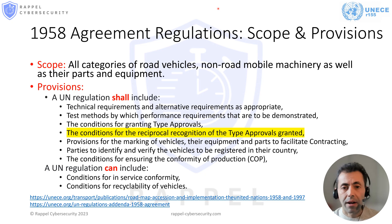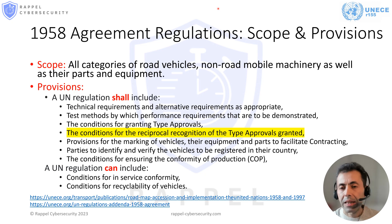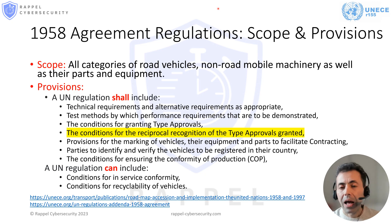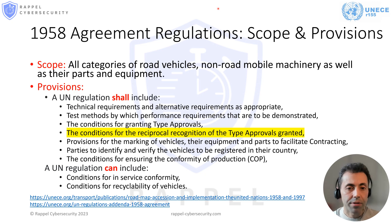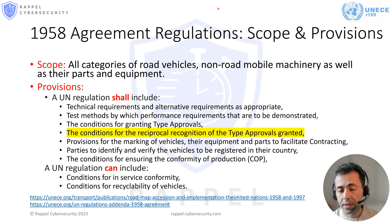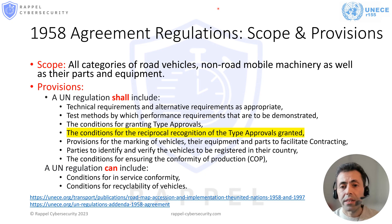All the regulations annexed to the 1958 agreement must have the scope and the provisions listed in the slide. In other words, these are the common high-level objectives that shall be ensured by these regulations, but only if the regulations are entirely applied. We won't go into the details of these items; however, it is important to know what we should expect from UNECE regulations.